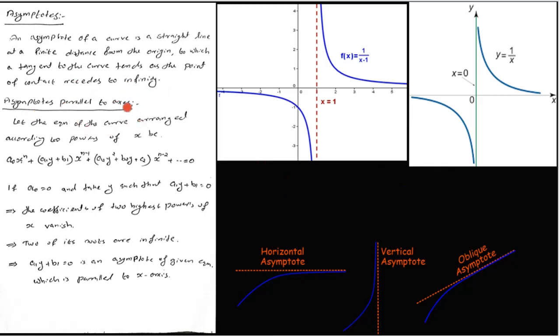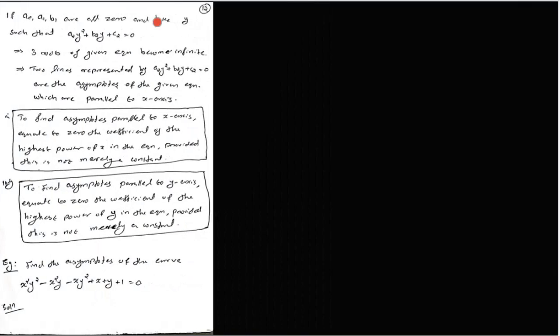To find asymptotes parallel to the x-axis — that is, horizontal asymptotes — equate to zero the coefficient of the highest power of x in the equation, provided this coefficient is not merely a constant.